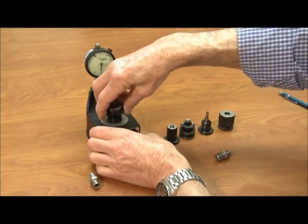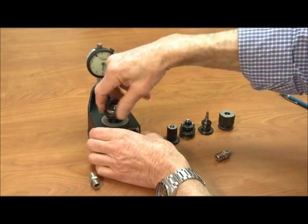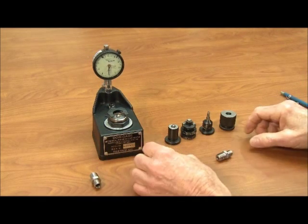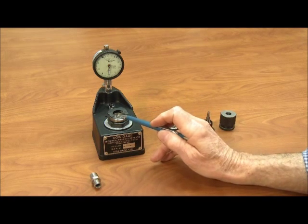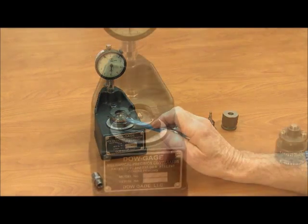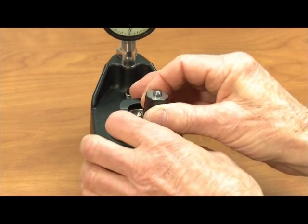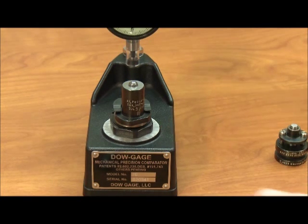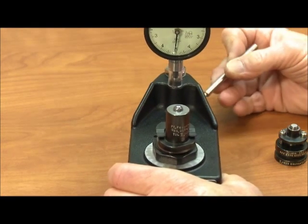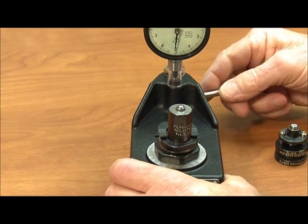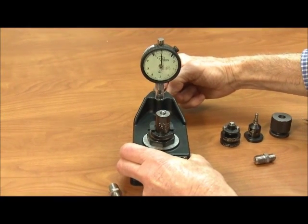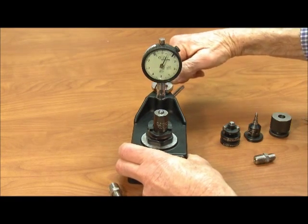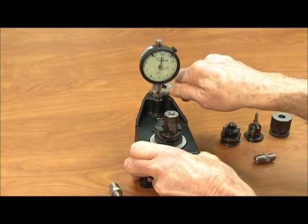To begin, you screw the flush pin adapter into the Dow gauge base. Lock it tight with a wrench. The gauge is set to zero when the top of this pin is flush with this seating surface. To set the gauge to zero, you slide an educated flush pin gauge body halfway into the spring clip on the flush pin adapter. At that point, you adjust the indicator post until you come to your zero setting just past it and lock the setting at zero.